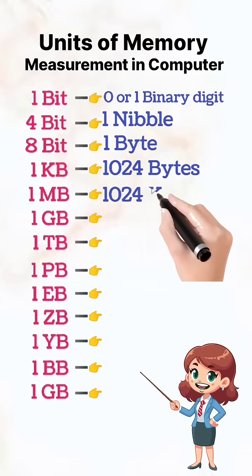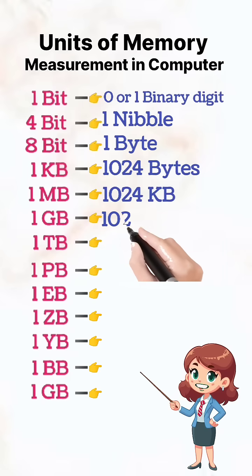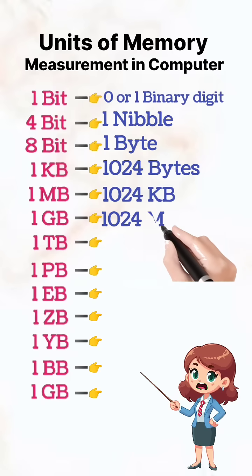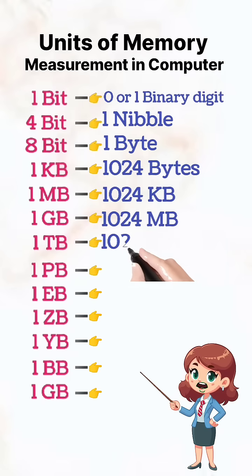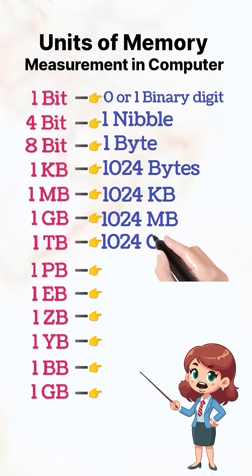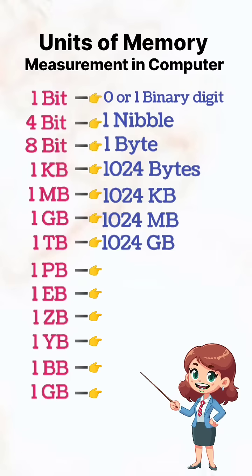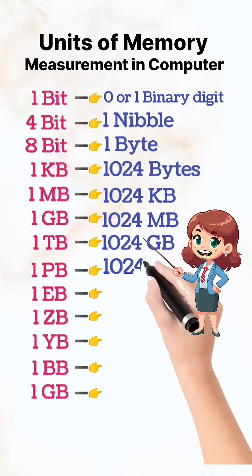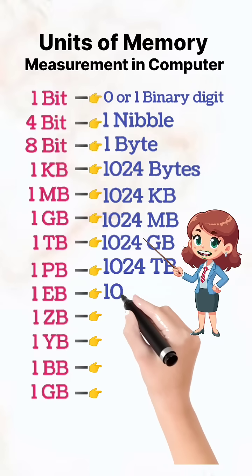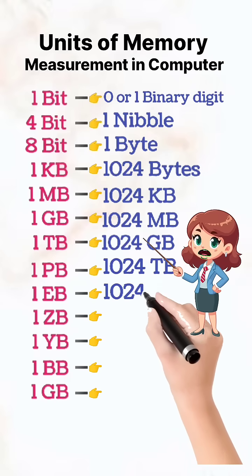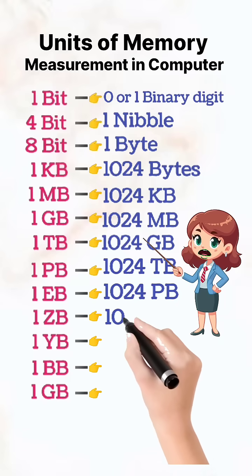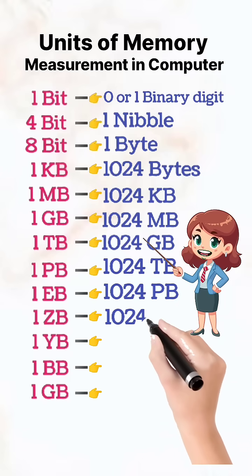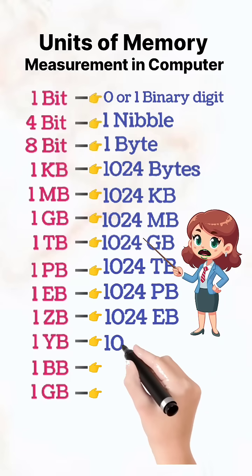1 gigabyte is equal to 1024 megabytes. 1 terabyte is equal to 1024 gigabytes. 1 petabyte is equal to 1024 terabytes. 1 exabyte is equal to 1024 petabytes. 1 zettabyte is equal to 1024 exabytes.